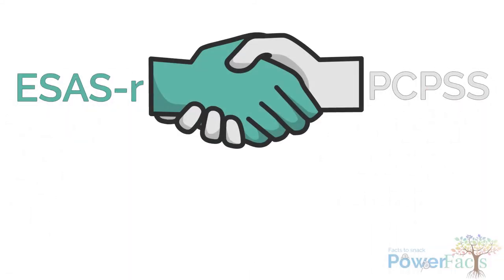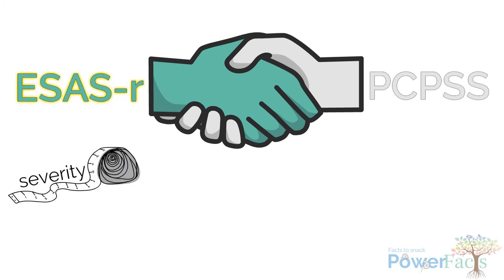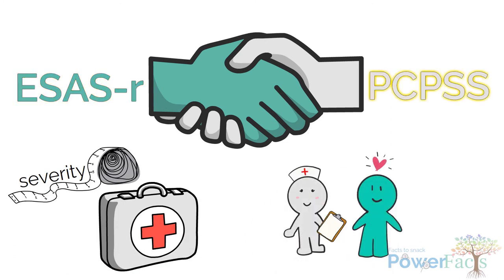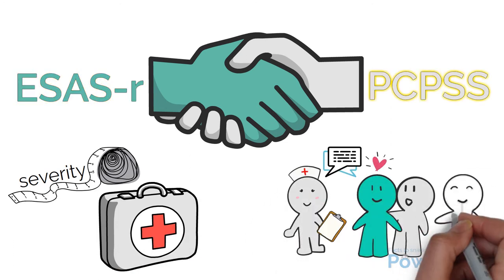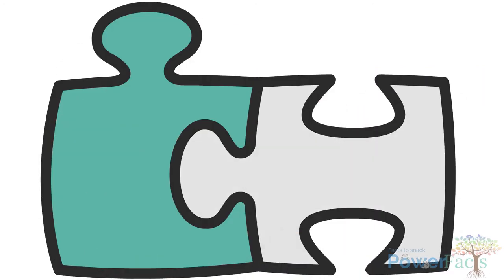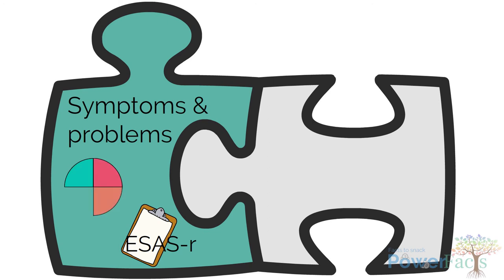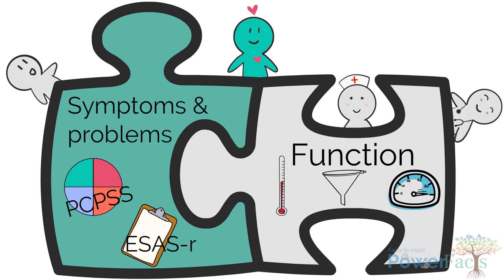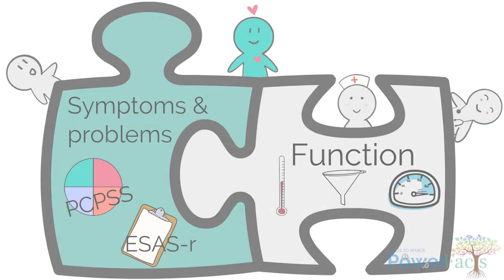These two scales are meant to complement each other. ESAS-R aims to measure the severity of symptoms and response to treatment, while PCPSS helps in the initial screening and coordination of care based on patients' needs. In summary, these tools are often used in conjunction with other tools such as functional assessment tools to manage patients' symptoms, needs, and coordinate care.